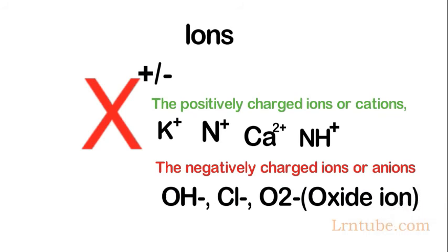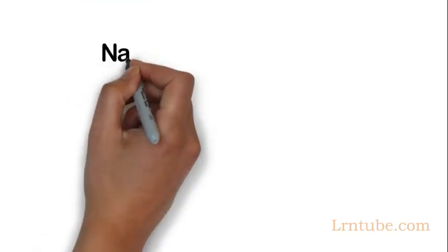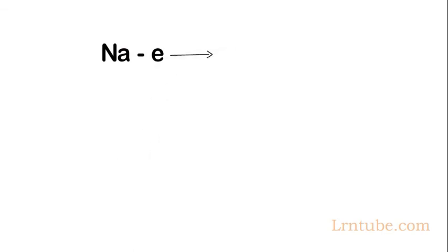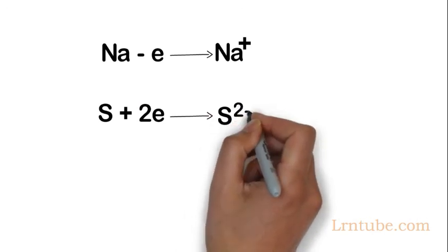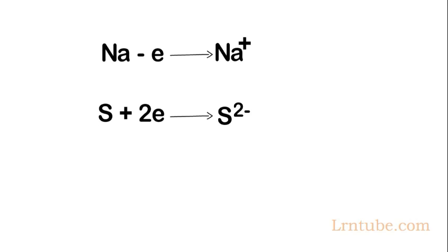Ions are produced when atoms gain or lose electrons. When an atom loses an electron, it becomes a cation (positively charged). For example, when sodium loses one electron, it becomes Na+. When sulfur gains two electrons, it becomes S2-. When an atom gains an electron, it becomes negatively charged, and when it loses an electron, it becomes positively charged.